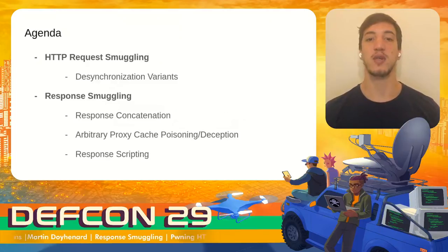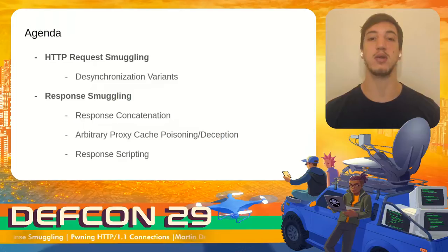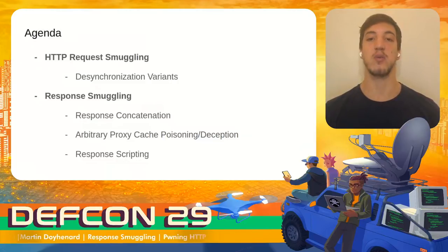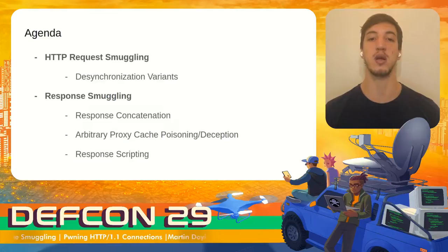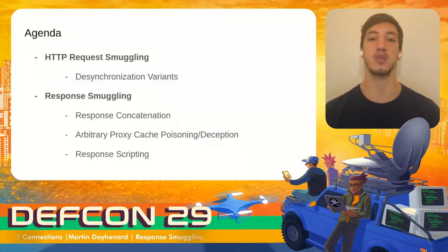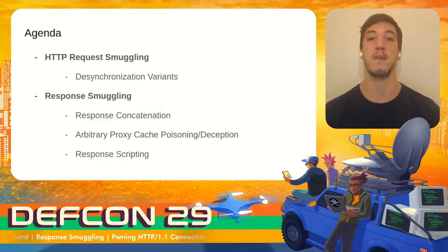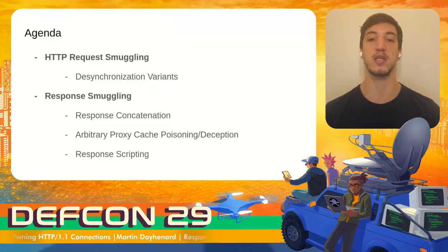The agenda for today: first, I'm going to make a quick recap on HTTP request smuggling. I'll also talk about desynchronization variants, and about one in particular that will be used through the rest of the presentation for both demos and examples. After this introduction, I'm going to explain what response smuggling is and how to use it for different malicious purposes — including how to hijack responses and requests from a persistent connection and how to obtain reliable results in real systems. Next, I'll demonstrate how to concatenate multiple responses and build malicious payloads to take control over the victim's browser, and also how to poison the web cache of an HTTP proxy. Finally, I'll explain how to split responses and inject arbitrary messages that will be stored in the response queue and delivered back to other clients by the proxy.